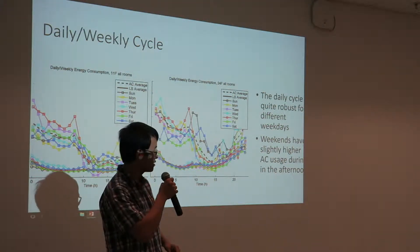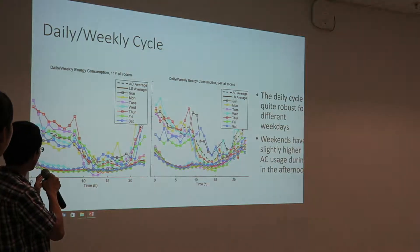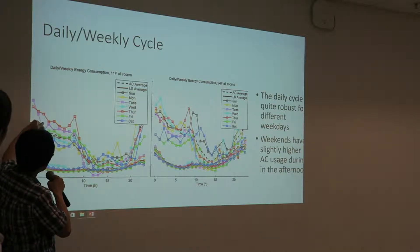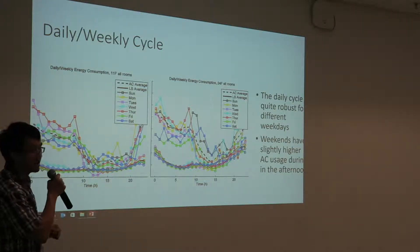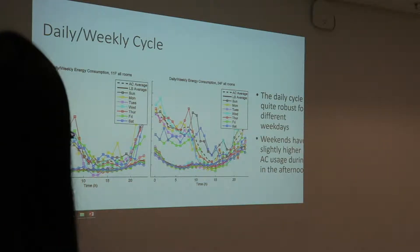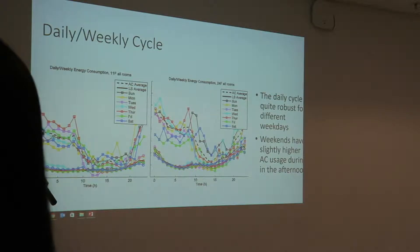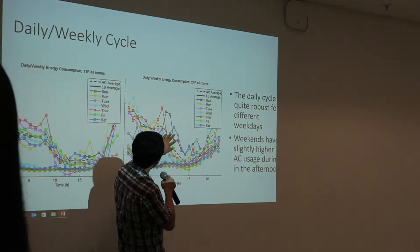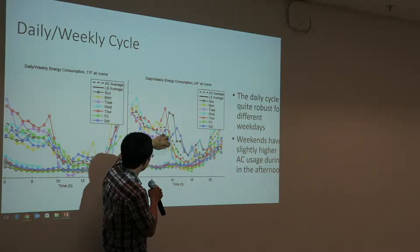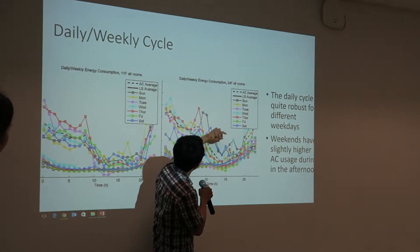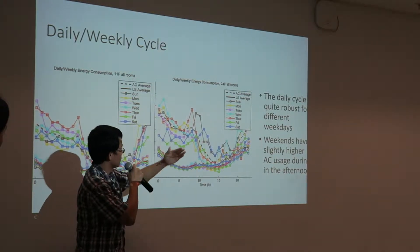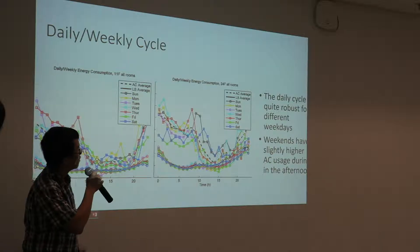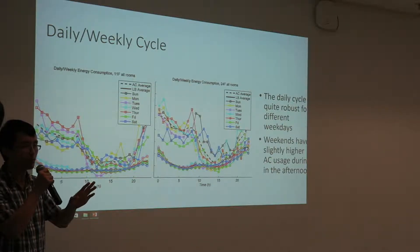We summarized further by averaging the data for each day of the week — Monday, Tuesday, and so on. The colored curve is the average AC usage and the black curve is for the light and socket usage. This is shown for both the 11th floor and the 24th floor. What we can observe is that during the weekend — Saturday and Sunday — the average value is higher than the weekday average. The daily cycle is quite robust with small variation.